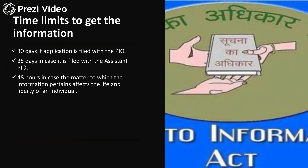The time limit of 30 days is very important. It is 35 days in case the RTI is filed with the Assistant PIO. It is reduced to 48 hours in case the matter pertains to information affecting the life and liberty of an individual — so it has to be very quick. This act truly empowers the citizens of India whereby they can get their queries immediately solved by the Public Information Officers appointed under the RTI act.